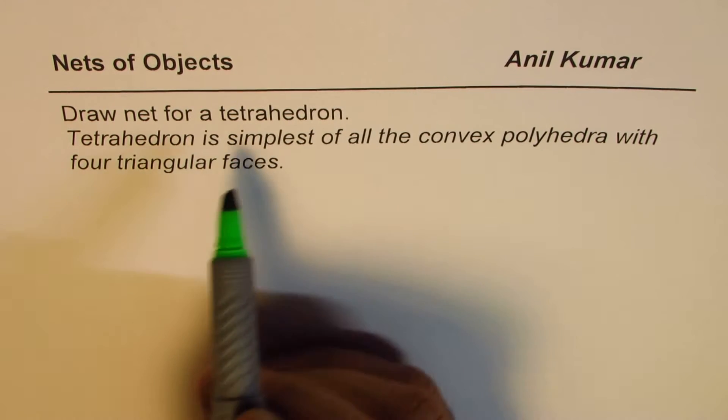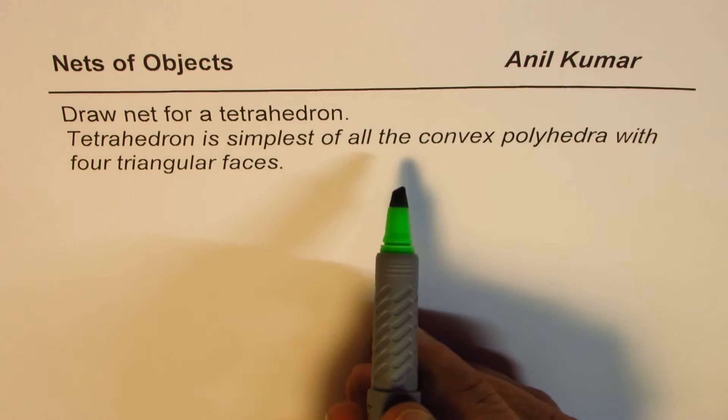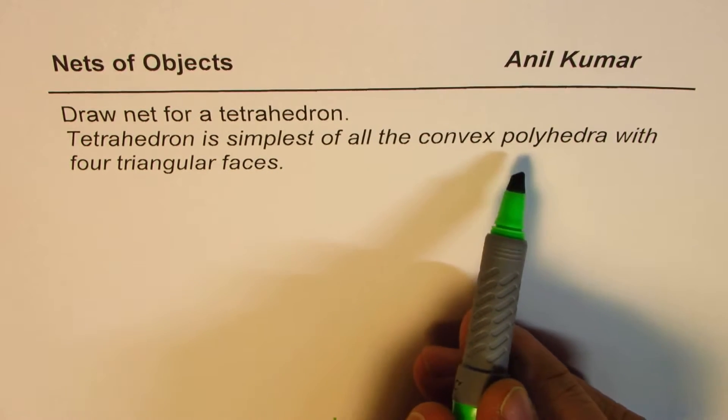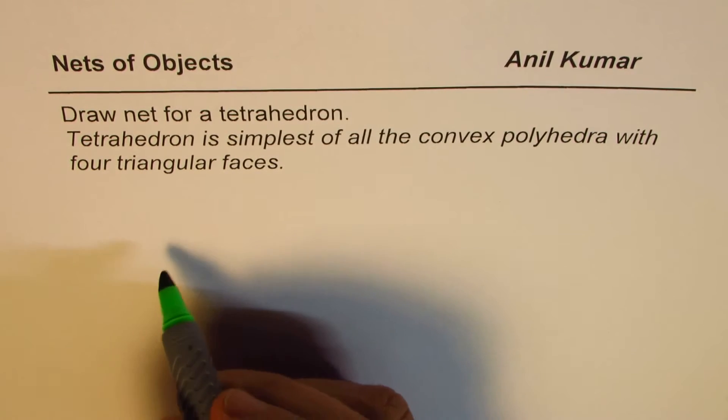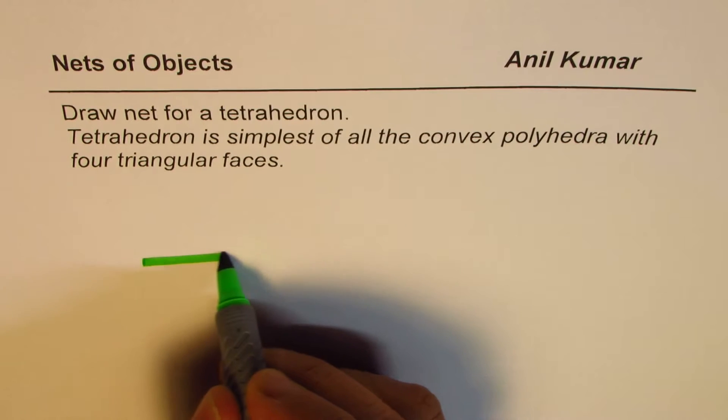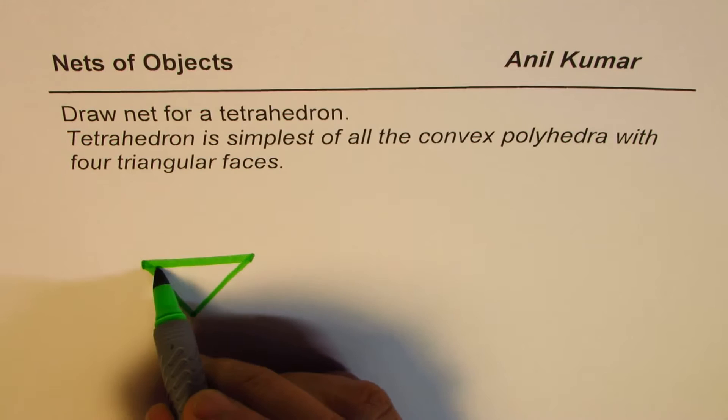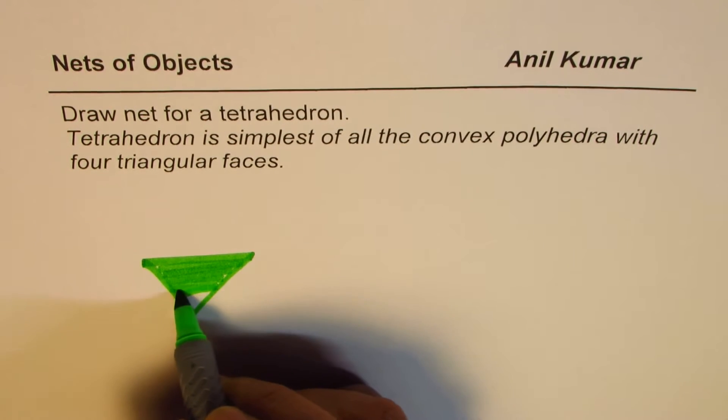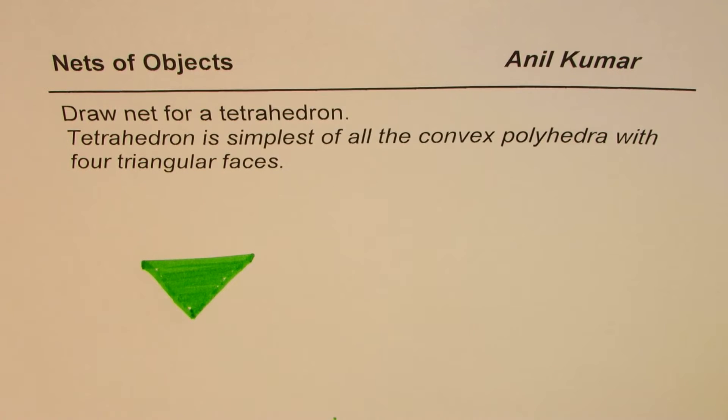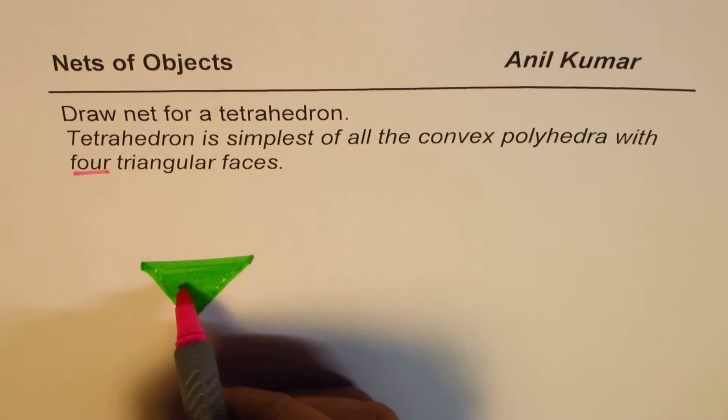Now as we have suggested here, a tetrahedron is really the simplest of all the convex polyhedra. It has four triangular faces. It's kind of like this - it has a triangular base. Let me just draw one triangular base here. So let's say this is the base for this tetrahedron.